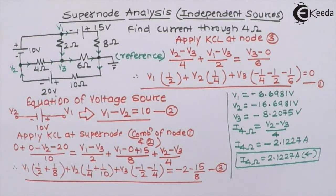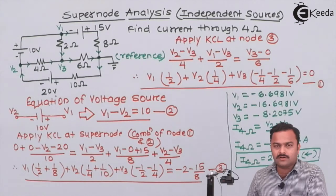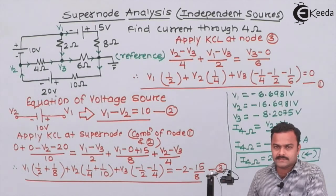So here we have solved a problem where a voltage source is present between two non-reference nodes. Then there is a concept called supernode analysis we are supposed to use to get the answer. So here we have solved the problem. Thank you.